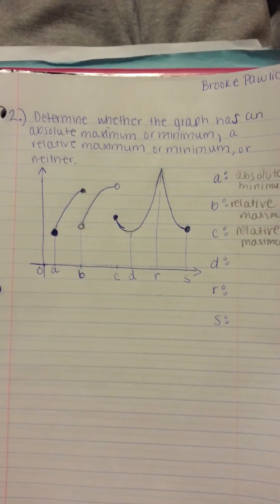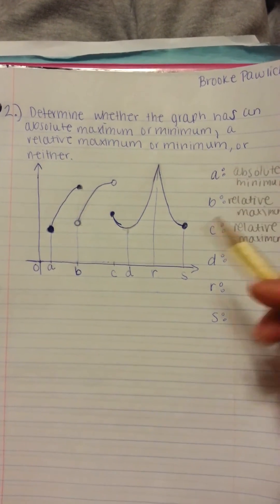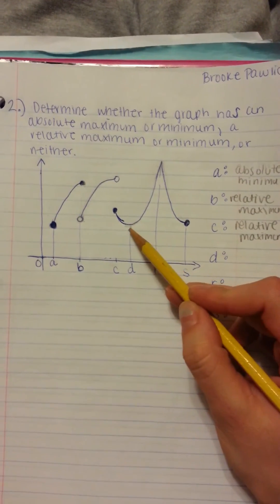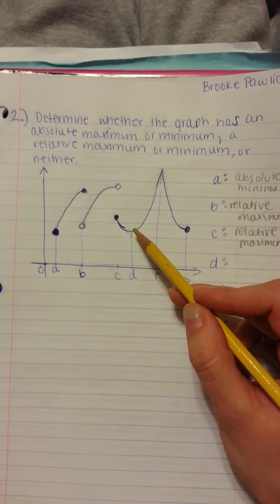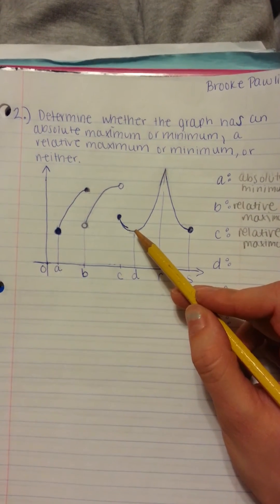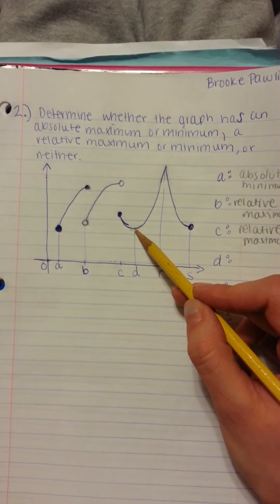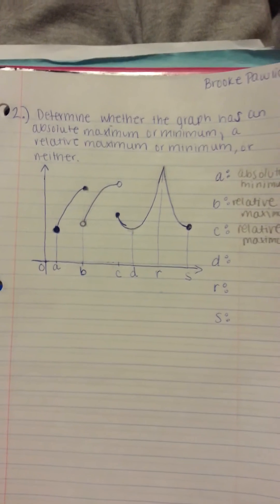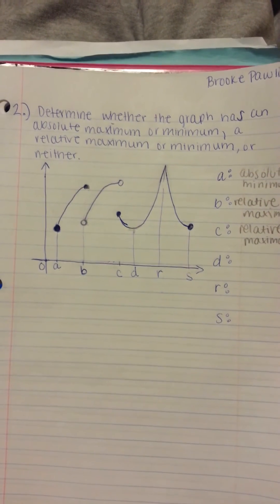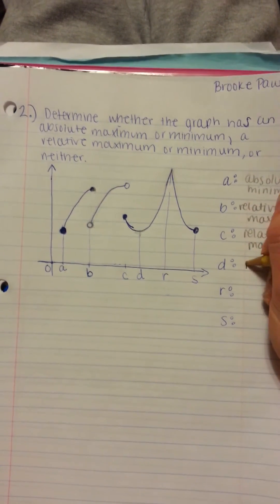For point D, by looking at it, we can tell it's a minimum. Since it's not the lowest value on the graph, we're going to call it a relative minimum.